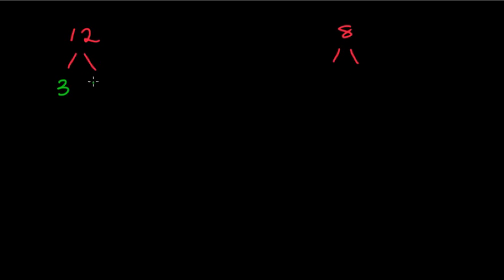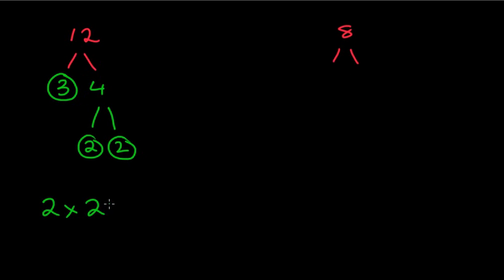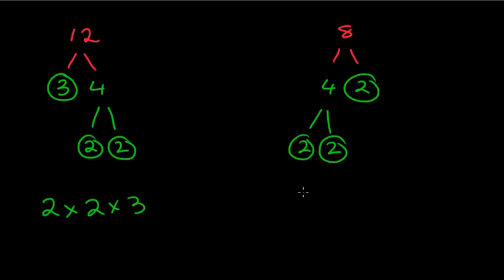For 12, we can split it into 3 and 4. 3 is a prime number, and 4 breaks down to 2 and 2. So underneath I write 2 × 2 × 3. For 8, we have 4 and 2, where 2 is prime, and 4 gives 2 and 2, both prime. So I write 2 × 2 × 2. I could write these as powers, but for finding the HCF I'll use the expanded form.